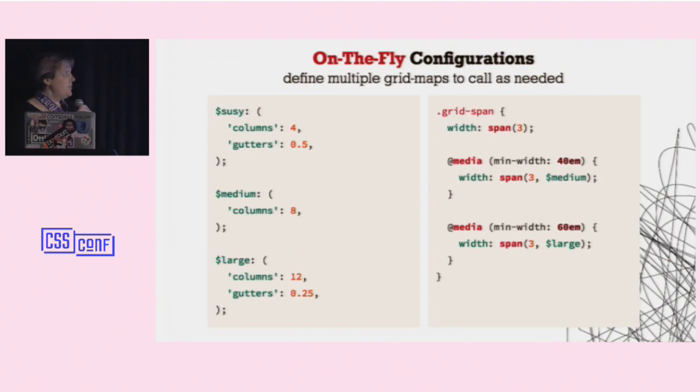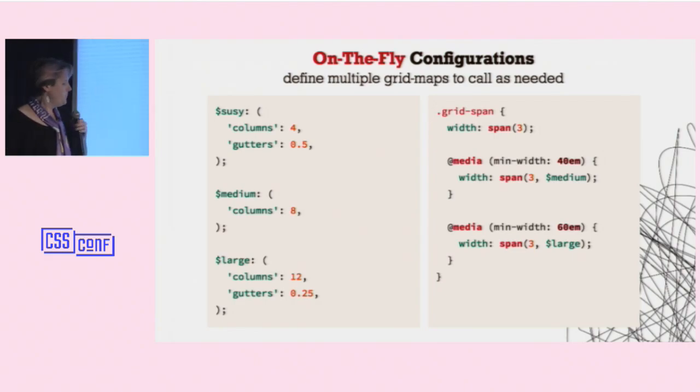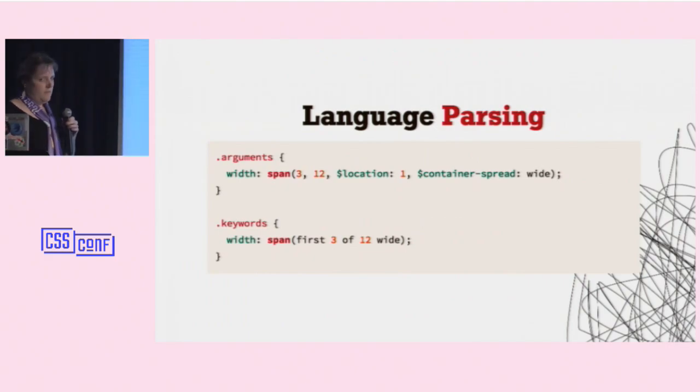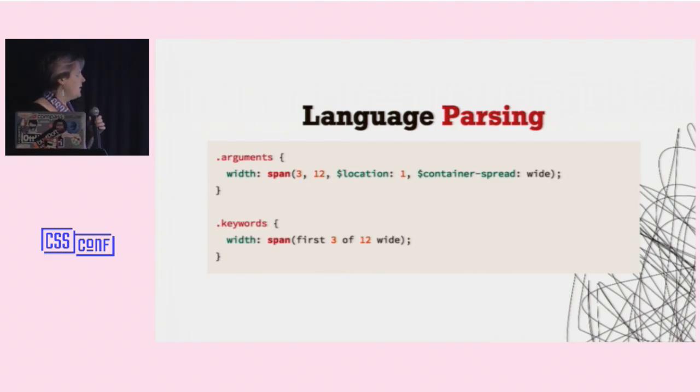So you can actually then in Suzy have multiple maps that are different configurations for Suzy. And you can keep them all around. And you can pass them in on the fly. So you can say, in this case, we'll use the defaults here for the first one. But then inside of this media query, we'll pass in a completely different configuration. And inside of this larger media query, we'll pass in another configuration. And you can create arbitrary, complete configurations inside of maps however you want. And then pass them into the system and it understands them. So I found that pretty useful. I thought that's a great way to do a lot of user control, a lot of configuration on the fly.